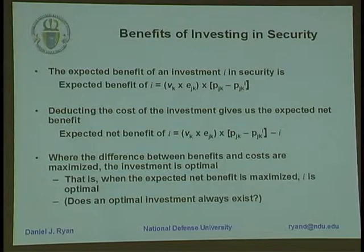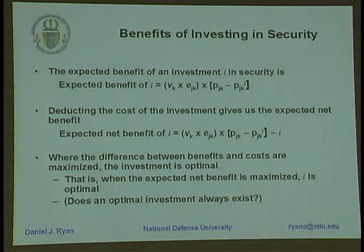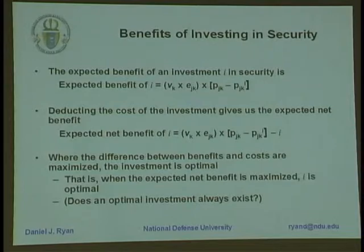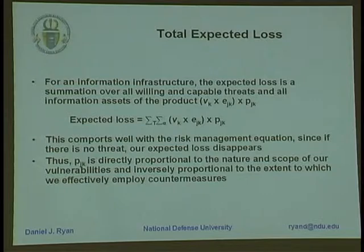We're told by the pundits that the way to look at this is to take the expected benefit of our investment in information security — some number of dollars we're being asked to spend — and figure out what that does for us. It's supposed to lower the probability of a successful attack, giving us some expected benefit. If we take away the actual amount spent, we get the expected net benefit of our investment. Those equations assumed a single information asset threatened by a single threat. To look at the full information infrastructure, we have to sum over all assets and all possible threats.